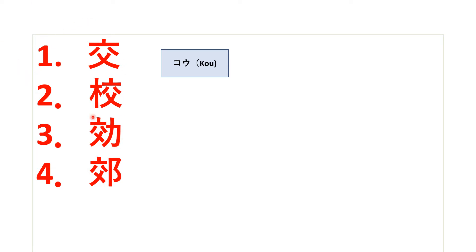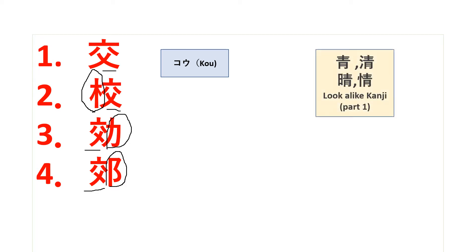These kanjis look similar but have different radicals attached to them. The remaining part in all four kanjis is the same. In Part 1 we learned the easy way to memorize four similar kanjis, but those kanjis do not have the same sound like the ones in this video. To see the look-alike kanjis Part 1, please check the link below in the description box.